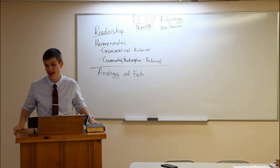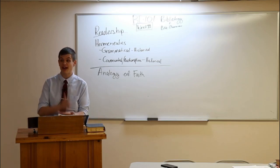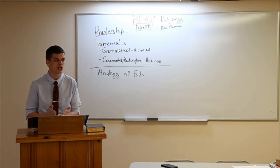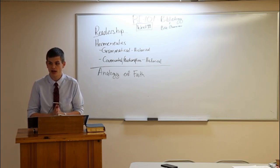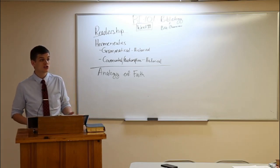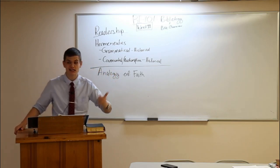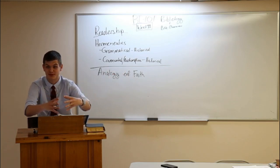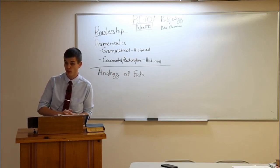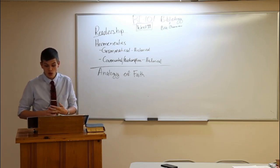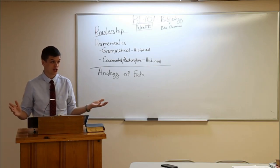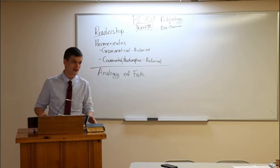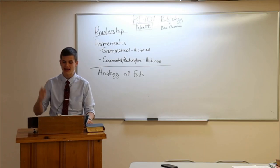John 3:16 simply states explicitly that whosoever believes shall not perish. If I said anyone who comes to Dover, Tennessee can get their hair cut at Barrow's Barbershop, that's true — but someone in Canada who's paralyzed has no means of coming. That doesn't make my statement incorrect, because I didn't say anything about anyone's ability to come. To figure out who is able to come, we simply check the context of John's Gospel and find Jesus saying, 'No man can come except it be given him of the Father.' We interpret the implicit by the explicit.